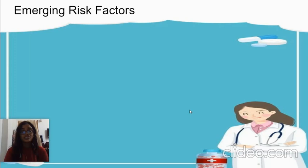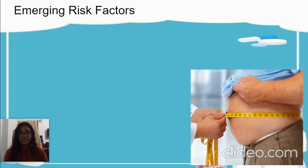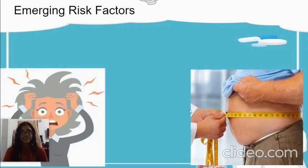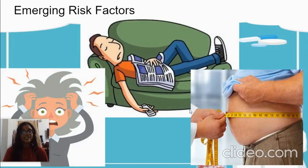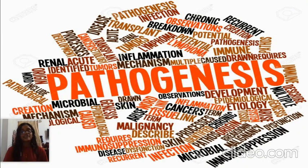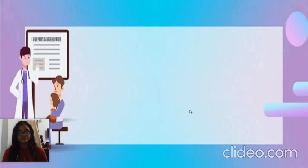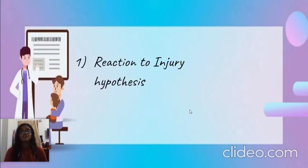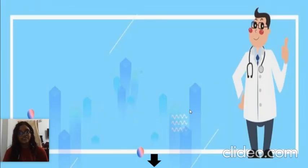Emerging risk factors which we see today are obesity, stress, and inactivity. Now let's see the pathogenesis of how these risk factors lead to the development of plaques and the causation of these diseases. This is described by two theories: the reaction to injury hypothesis and the monoclonal theory.